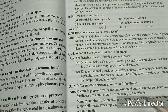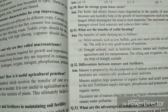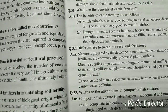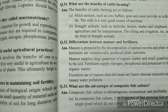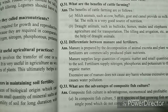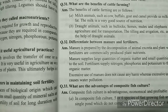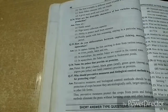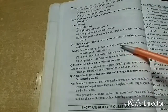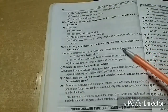Differentiate between manure and fertilizers — you should be clear on that. Another very very important question: What is composite fish culture and state its advantages? This is generally asked in the exam — don't miss this question, prepare it very well. Then: How do you differentiate between capture fishing, mariculture, and aquaculture? — another important question.